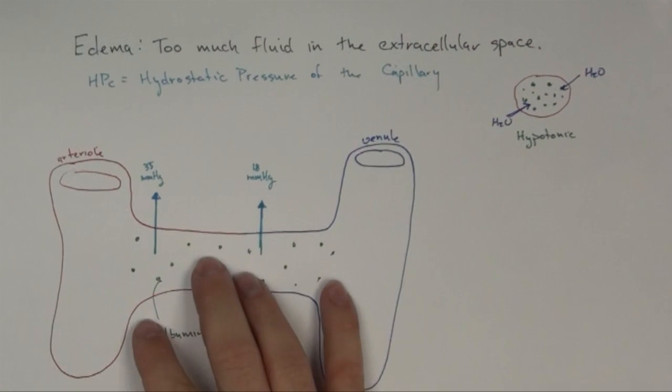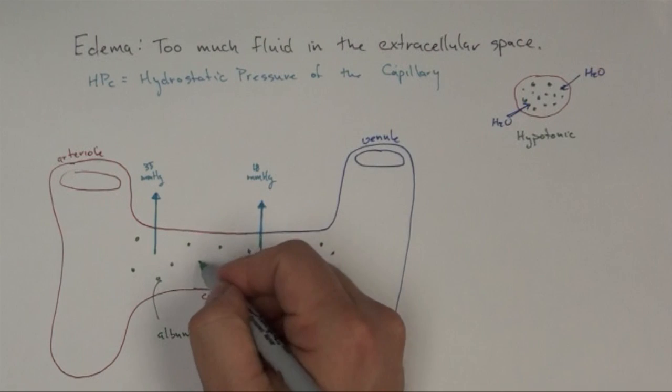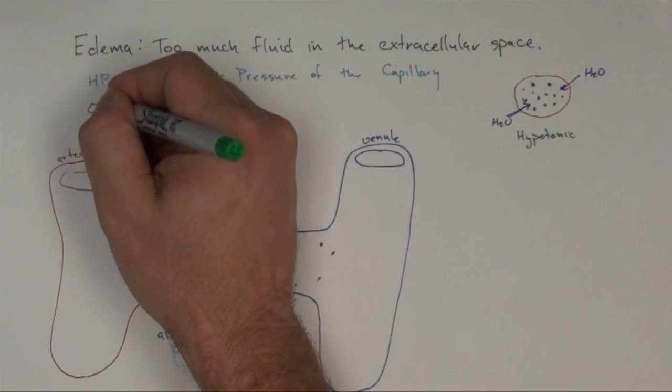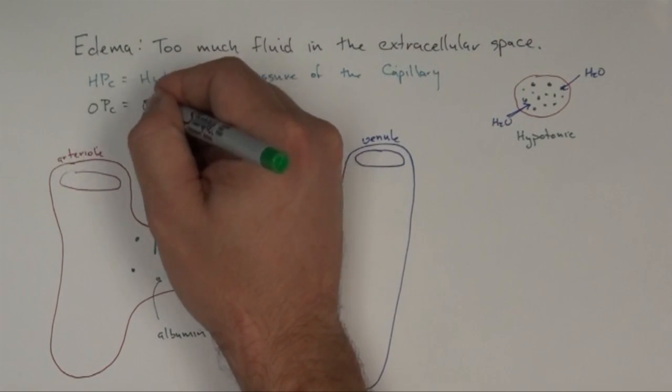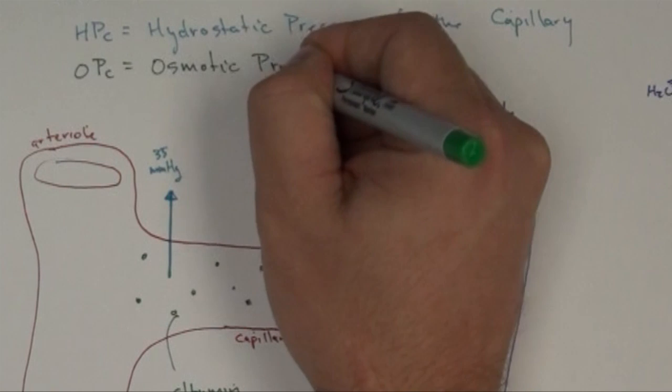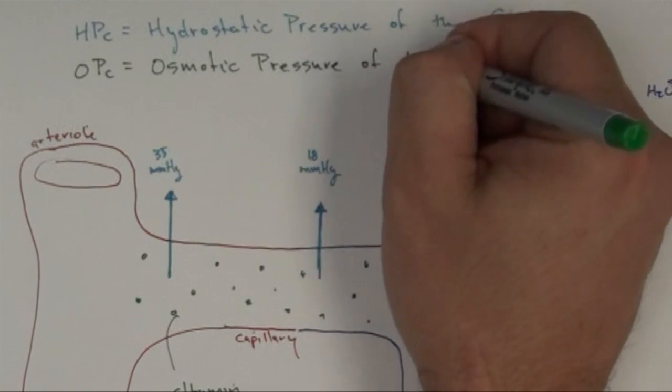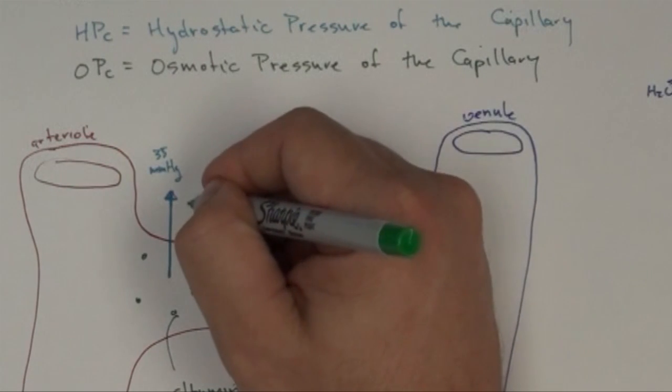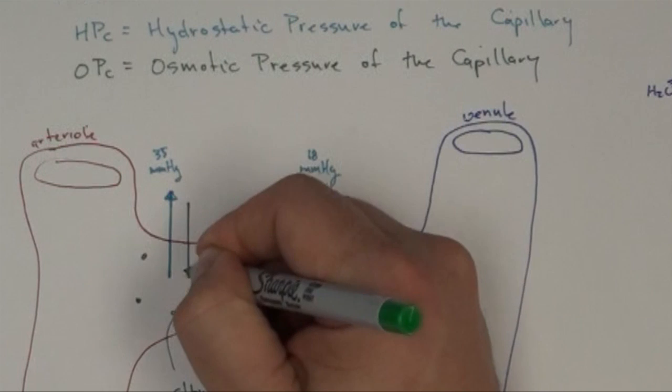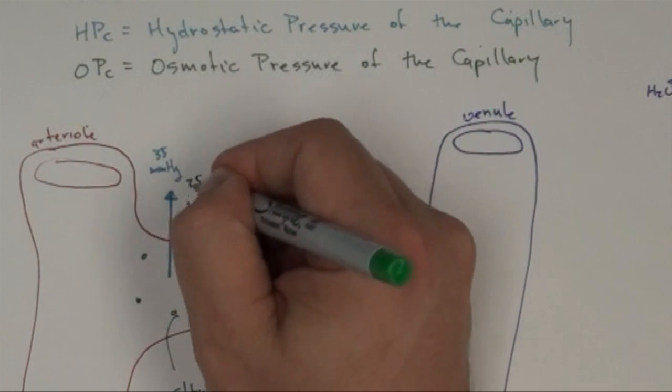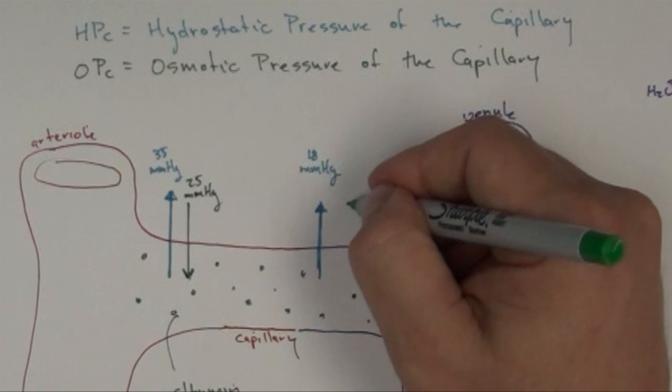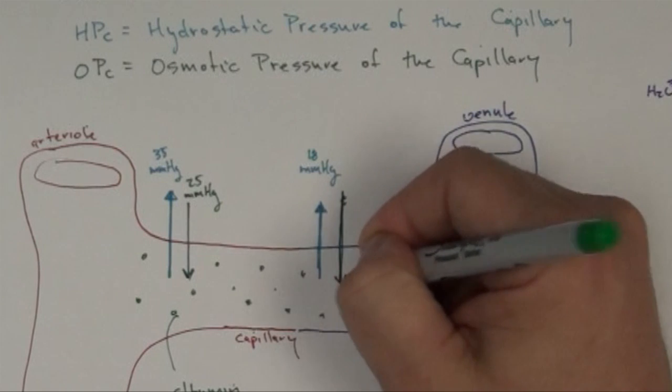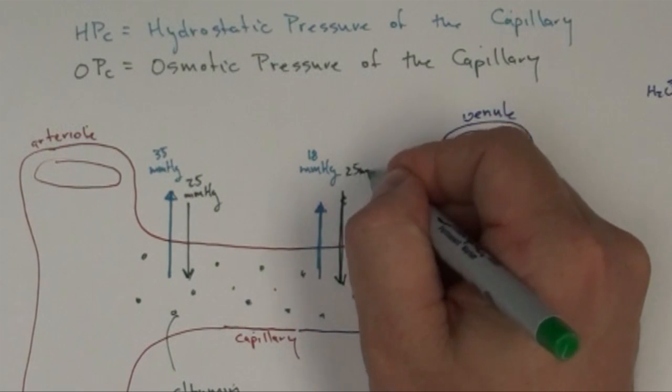The same thing is going to happen down here in this capillary. If we create this albumin, it's going to want to draw water from out here back towards this albumin. And so this is called osmotic pressure of the capillary. The thing about osmotic pressure is it stays the same at both ends. At the arterial end, it's about 25 millimeters of mercury, and at the venial end, it's about 25 millimeters of mercury.